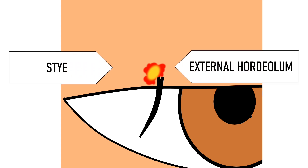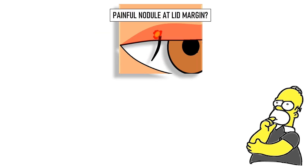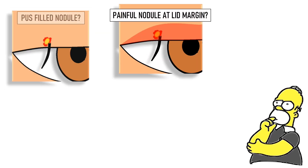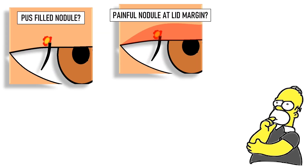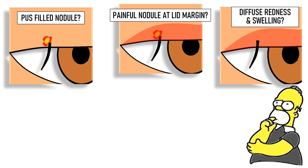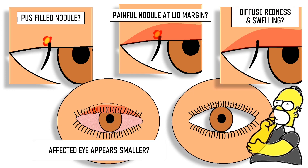Another name for a stye is external hordeolum. Do you have a painful nodule at the margin of your eyelid? Does it look like it is filled with pus? Or is your eyelid diffusely red and swollen, and is your affected eye appearing smaller in size than your normal eye? In all these cases, you might have a stye and you must visit your eye doctor immediately.